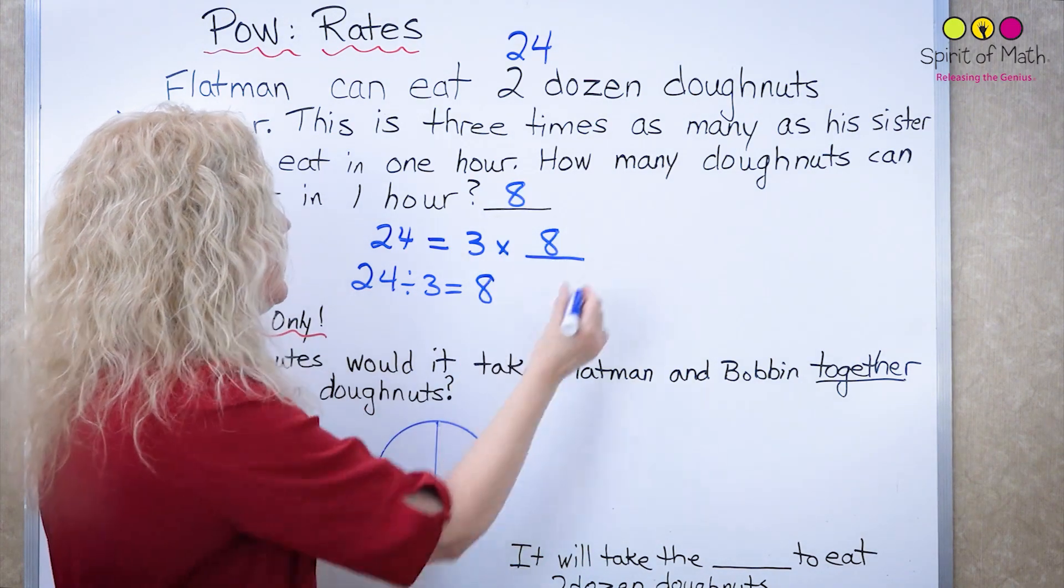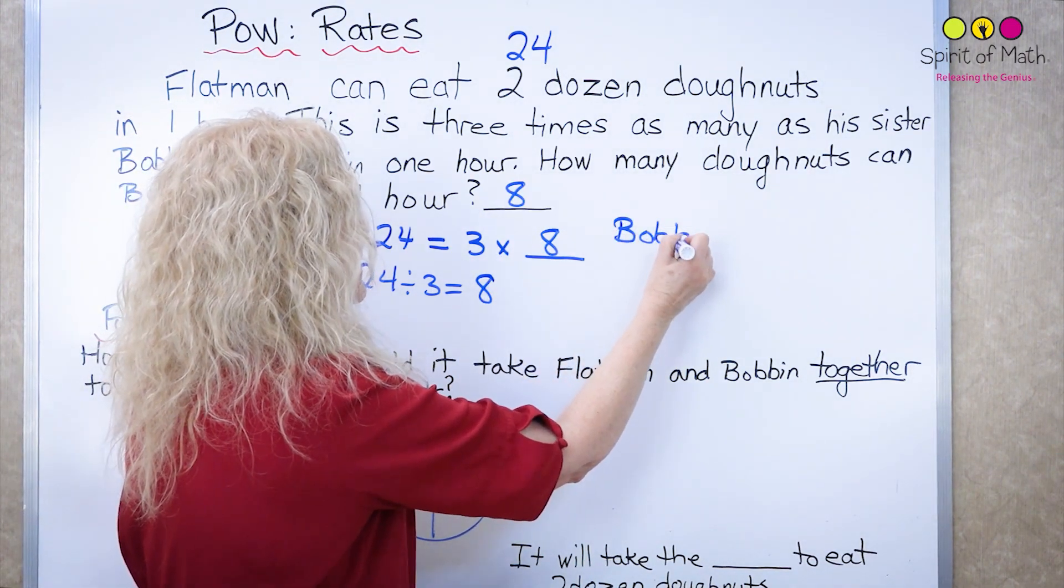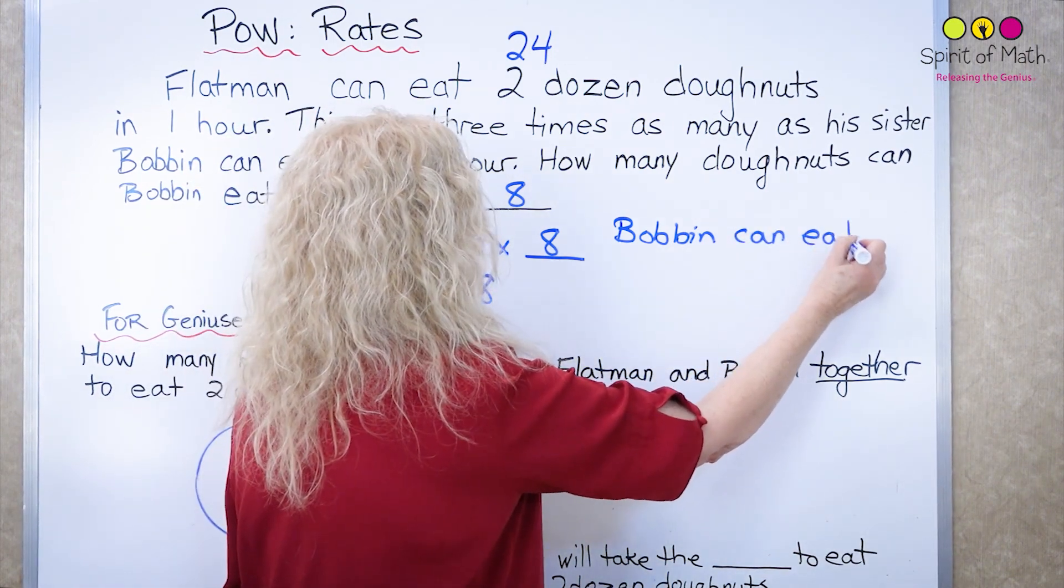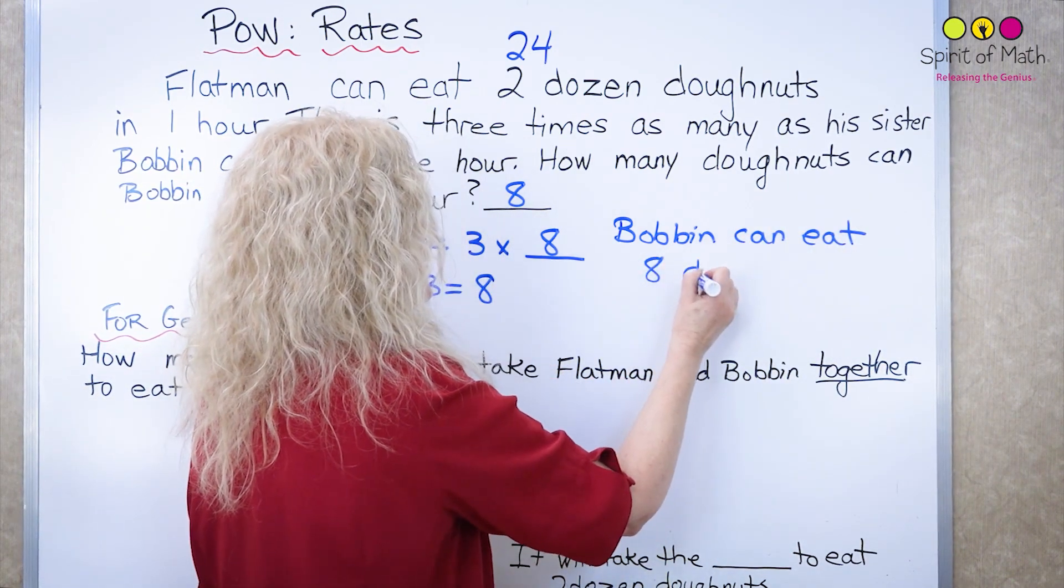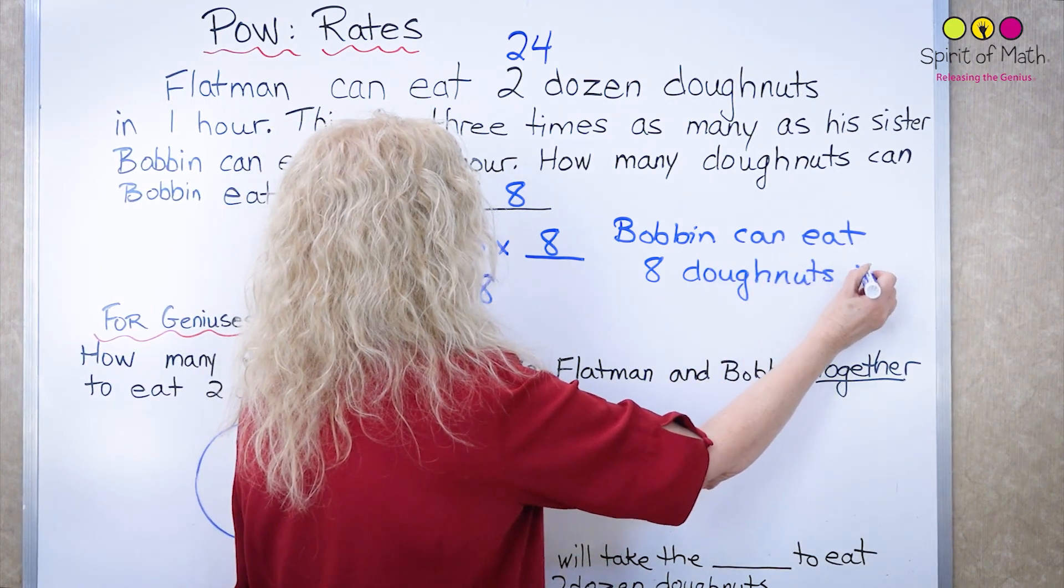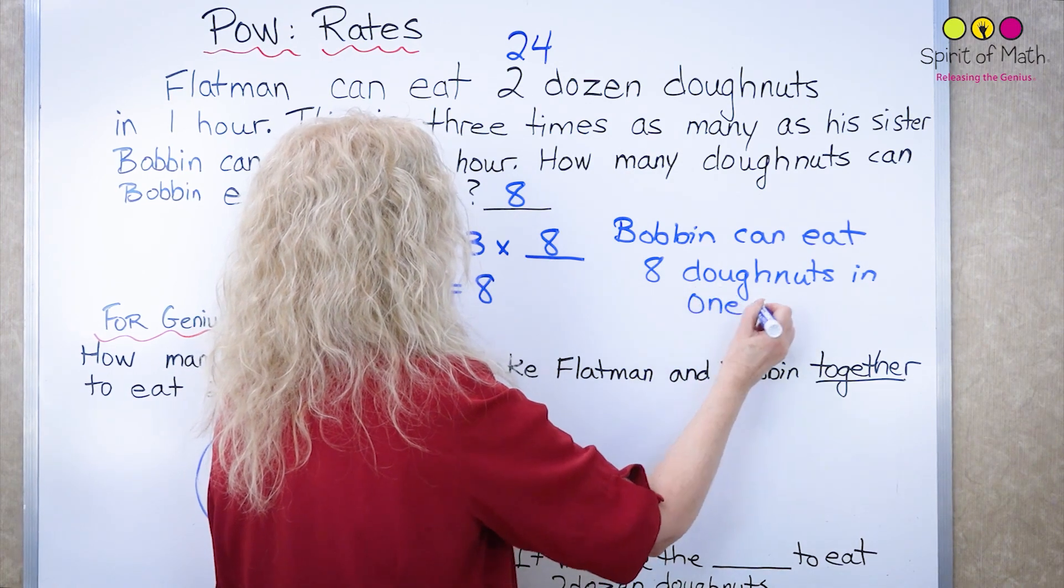So Bobbin can eat eight doughnuts in one hour.